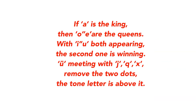I have created a short poem for you guys to remember the order more easily. If A is the king, then O and E are the queens. When YI and WU both appearing, the second one is winning. Ü meeting with J, Q, X — remove the two dots, the tone letter is above it.